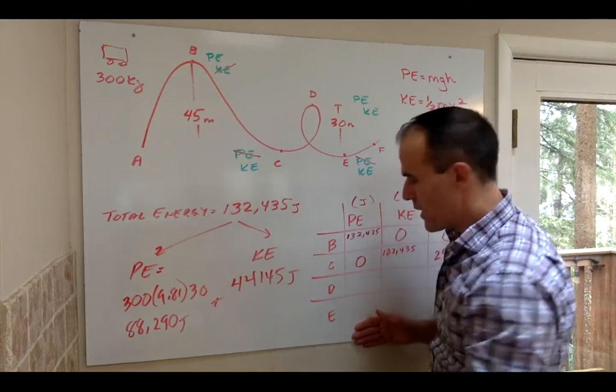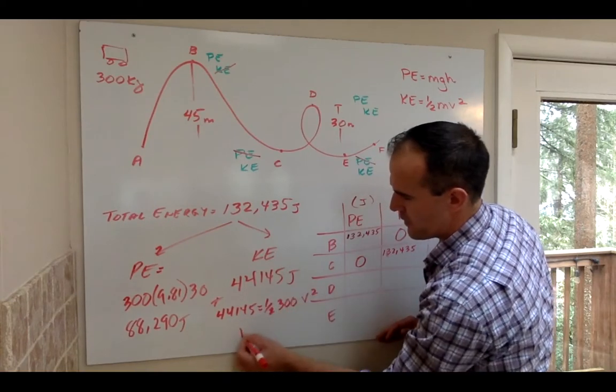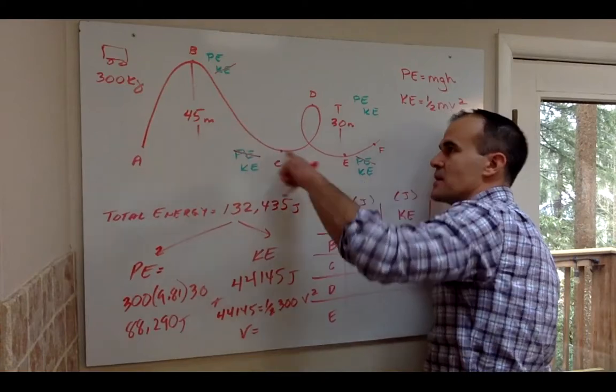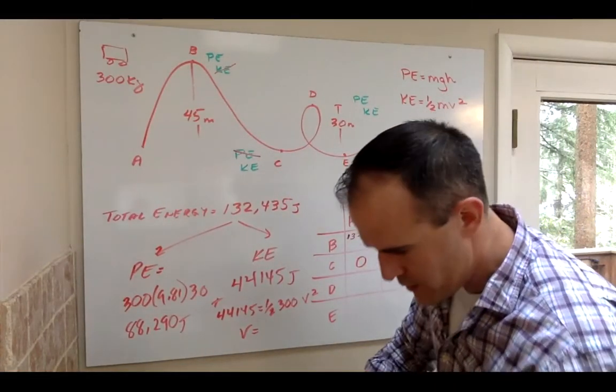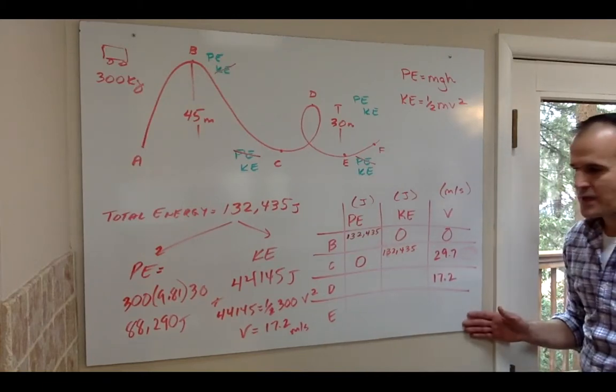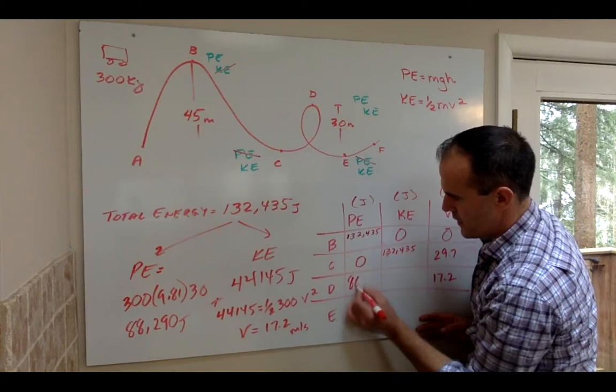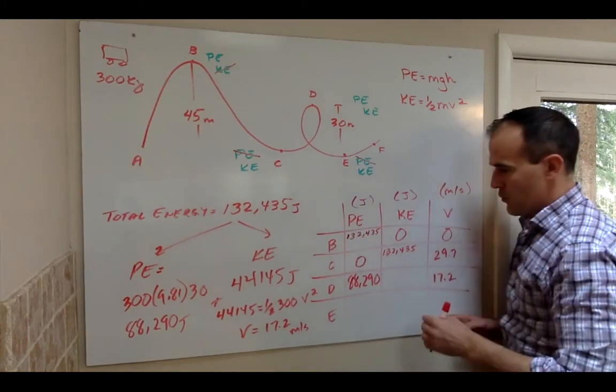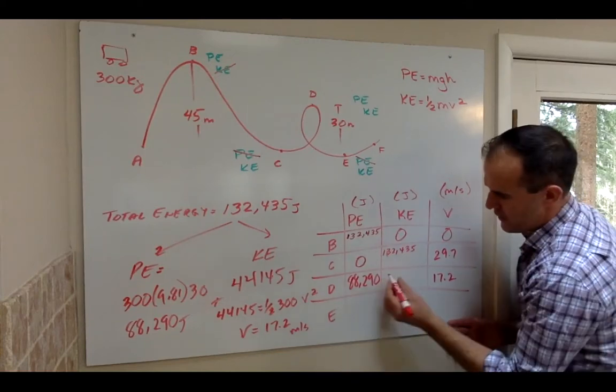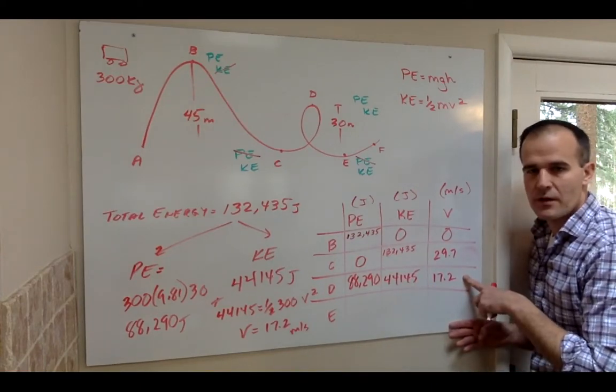And then just set that equal to one-half MV squared. So you set that equal to, so 44,145 equals one-half, 300 V squared. And solve for that V again. So when you solve for that V, you do get a slower speed, which should make sense. Again, you traded some of that speed at C for height again. So you slow down. So if you take the square root there, this time I get 17.2 meters per second. So in the loop, you're doing 17.2 meters per second. Let's put the other numbers where they go. So basically how you solve D, once again, is you do the math to find PE, so 88,290, MGH. Then whatever is left, these two columns always have to add up to the 132,000 number. So you do a subtraction, and that's how you find that 44,145 number. Set that equal to one-half MV squared, and you'll find the velocity then in the loop.